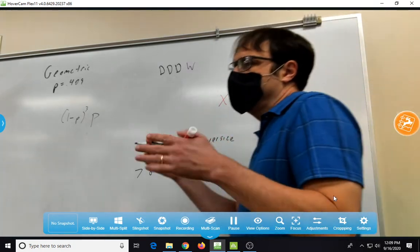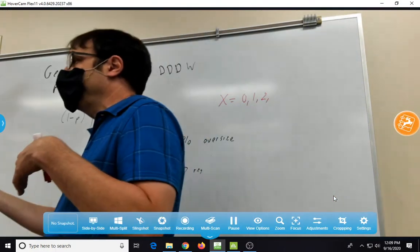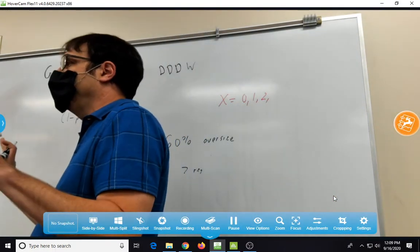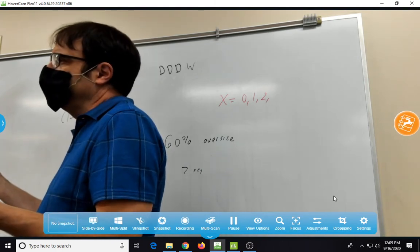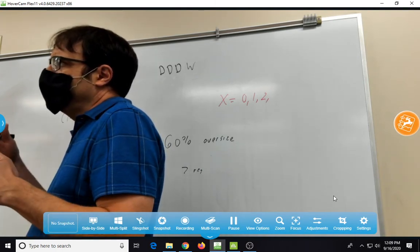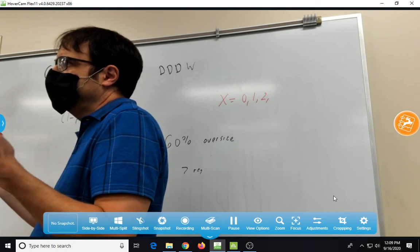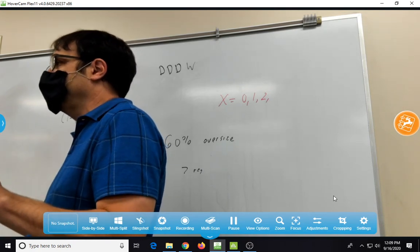All right, so we have 10 people come in. 6 of them want one. 4 of them want the other. We're good. 7 want one. 3 of the other. We're good. But when 1 wants 8 of either 1, then we're out of luck, right?